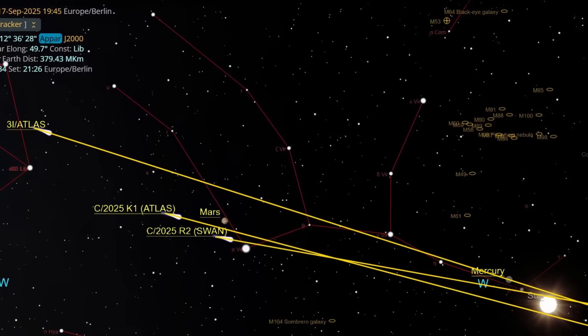For astronomers, the story of Three-Eye Atlas is more than just a new dot on the sky. It is the unfolding of a mystery in real time, a case study in how little we understand about the nature of interstellar objects.